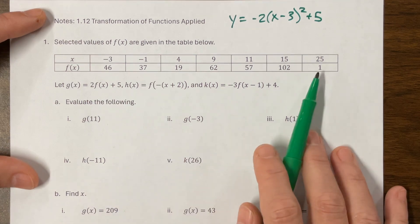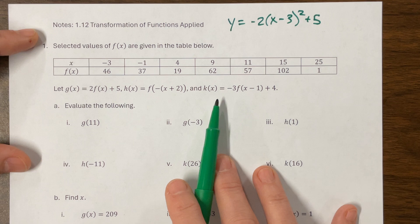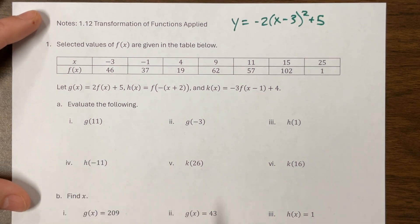So AP likes to ask transformation questions when they've been given a different table. There were some, like, pick the table that represents this transformation. So I want to work through some of those and show you how I think about these problems. So what I did is we created this random table, the function F, and then I have a function G, a function H, and a function K that all deal with transformations of F. And so then we're going to evaluate the following.